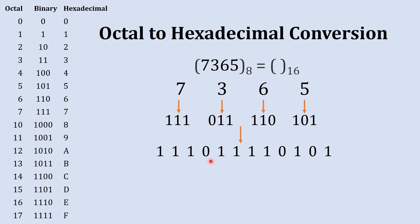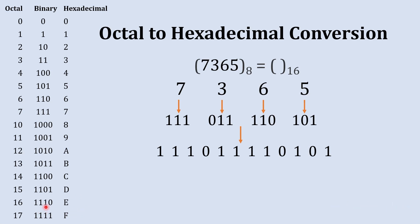Now forget everything and just remember that we have this binary number and we want to convert it into hexadecimal. The largest hexadecimal number is F, and that can be represented using a four-digit binary number. That is why all binary equivalents to hexadecimal are represented in four-digit manner.